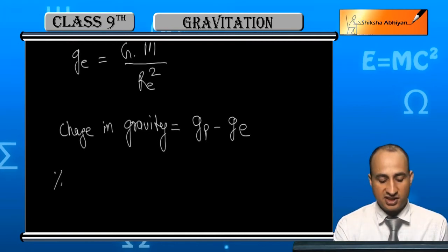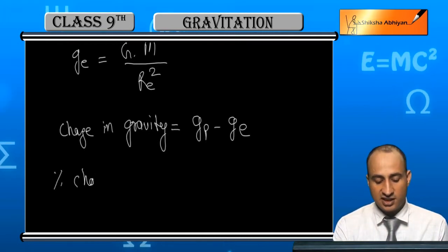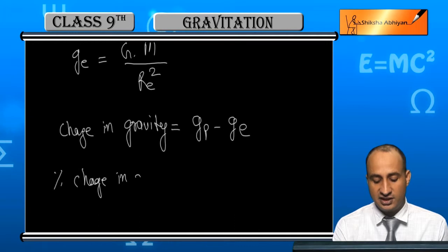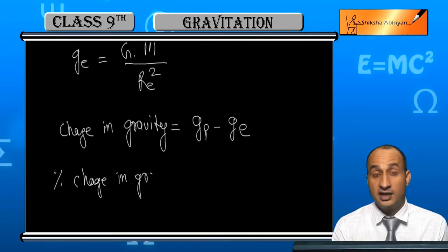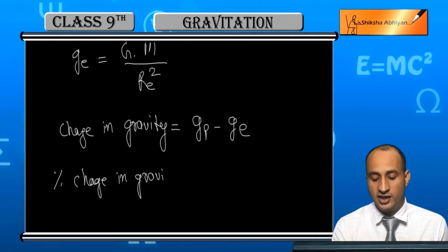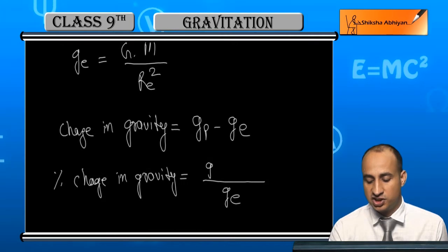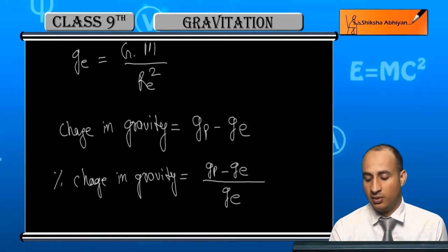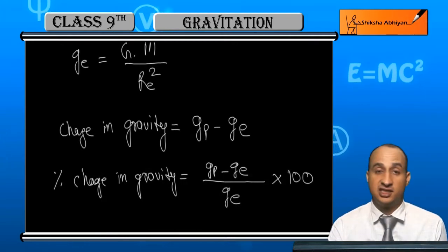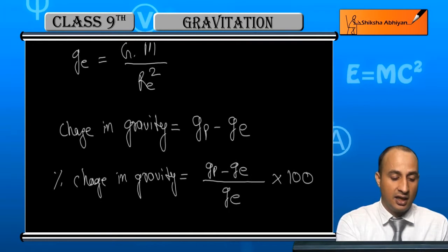For percentage change in gravity from equator to pole, the base will be GE (equator), and the numerator is the change: GP minus GE. Multiply by 100 because we need the percentage.